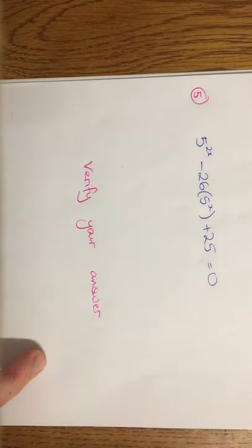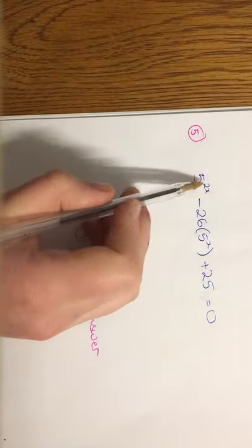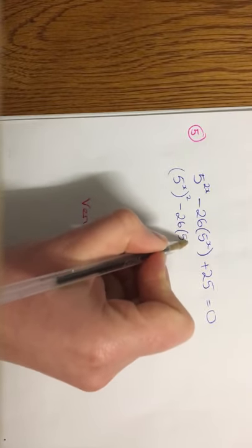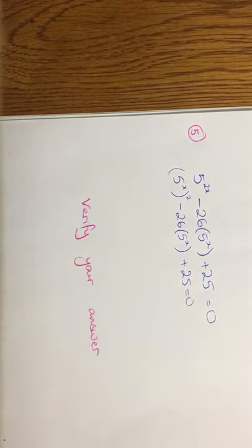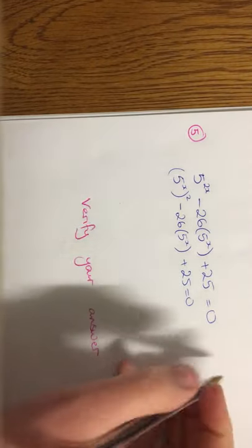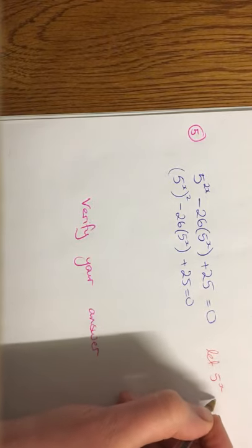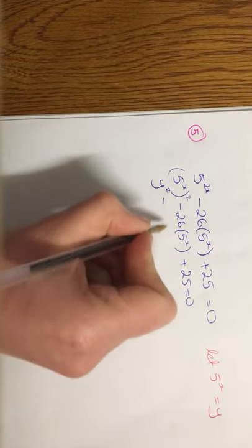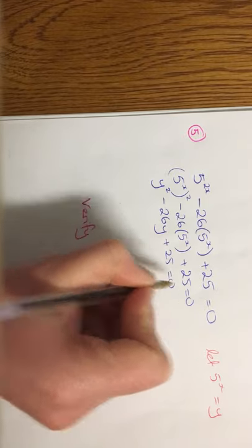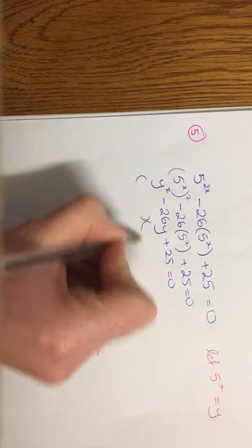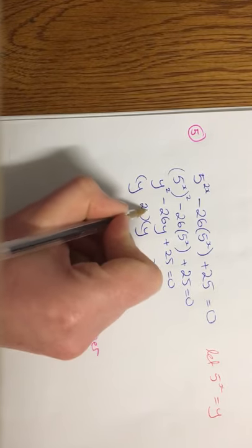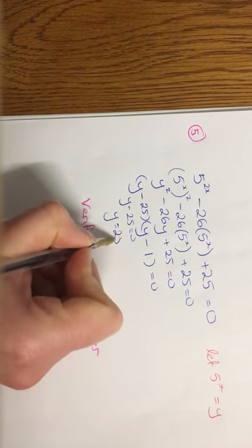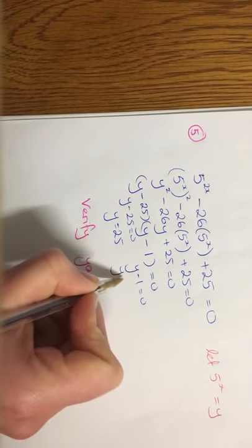One more for today. So we're going to solve and verify. So this is done in a similar way. So we're going to break that up. So it's going to be 5 to the x squared minus 26 by 5 to the x plus 25 equals 0. And I'm looking and I'm saying, right, that 5 to the x anyway, I'm going to say let 5 to the x equal y. So anywhere I see my 5 to the x, I'm going to sub in my y. So I have y squared minus 26y plus 25 equals 0. Go straight to brackets. So I get a y and a y, 25 and a 1 minus minus. So you get y minus 25 is 0, y is 25. y minus 1 is 0, y is 1.